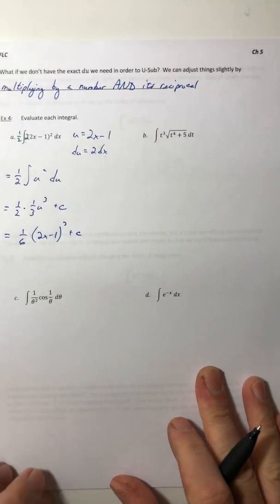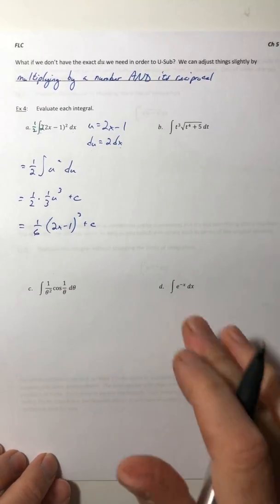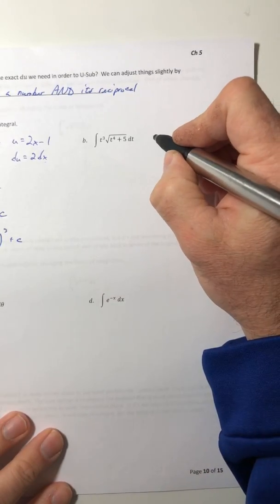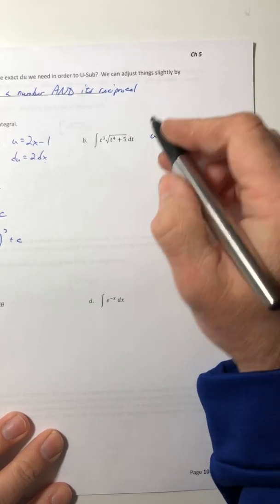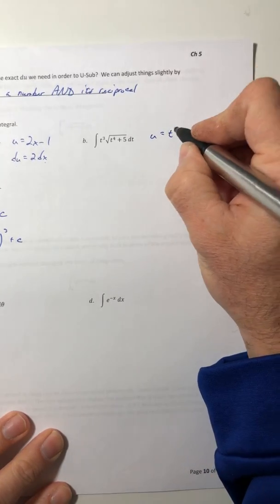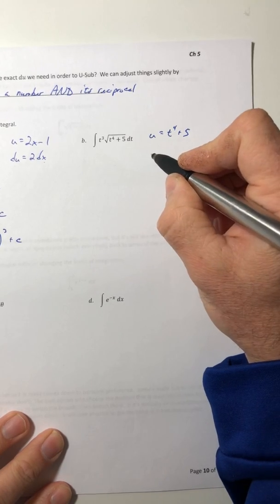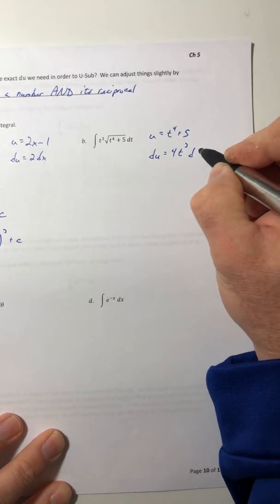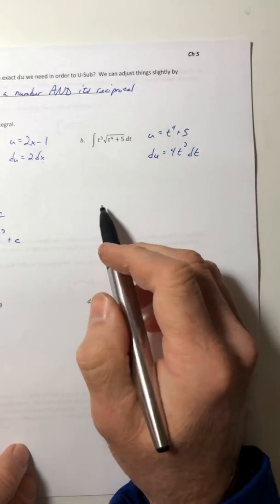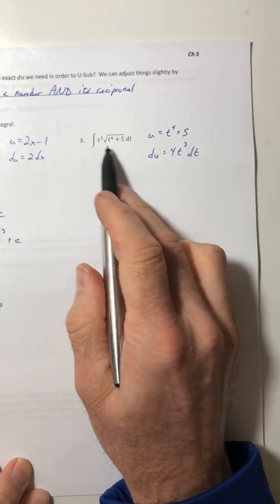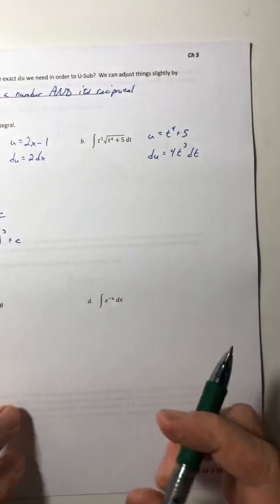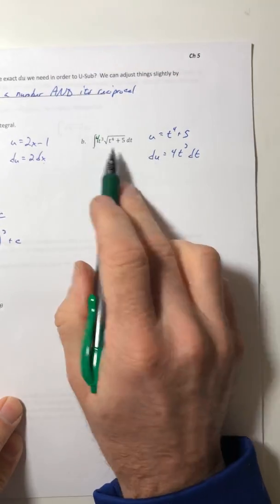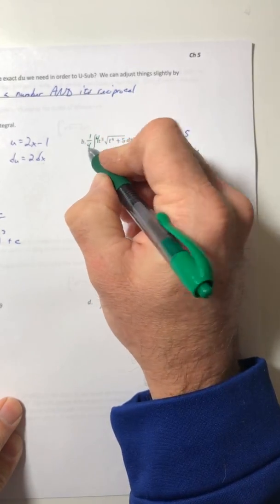All right, let's go ahead and try this next one, part b. So let's choose u to be the t to the fourth plus five. So my du needs to be 4t to the third dt. So I have a t to the third but I need a 4t to the third. So multiply in by the number you want, so the four, and then on the outside multiply by its reciprocal.